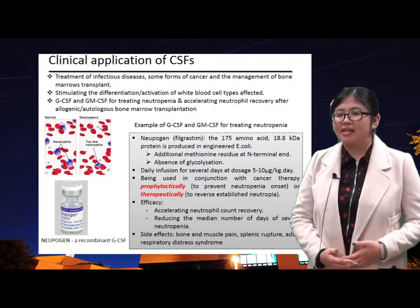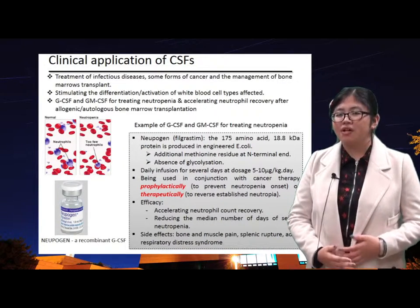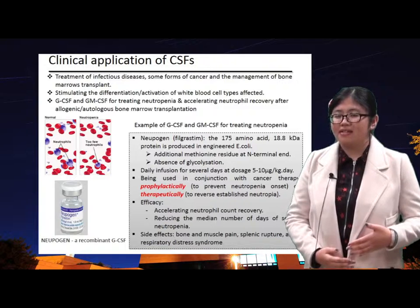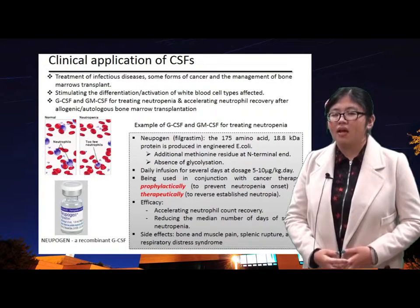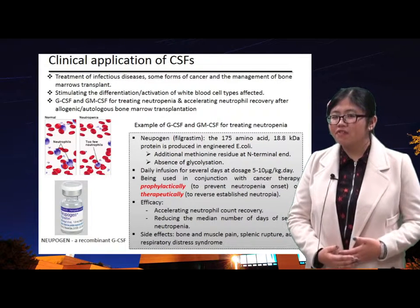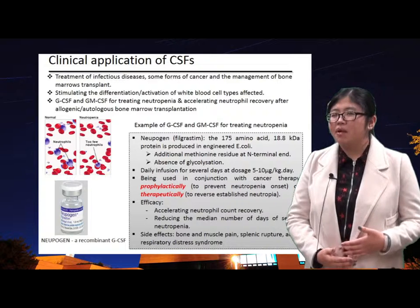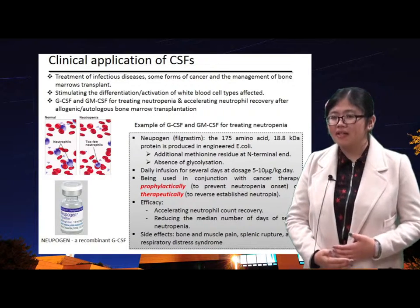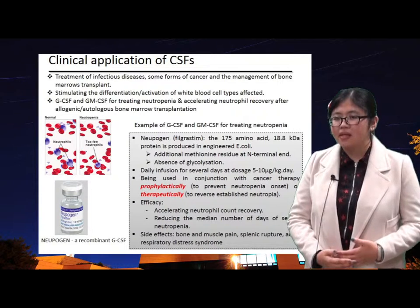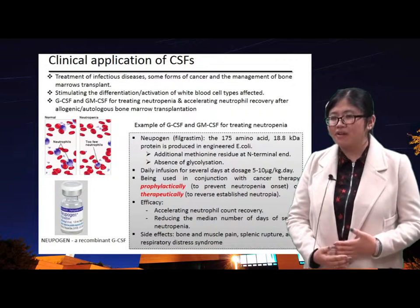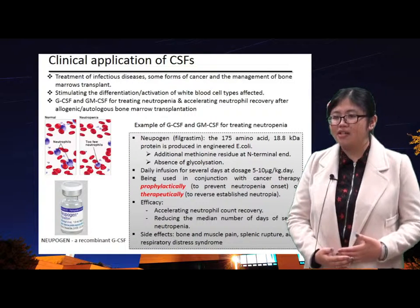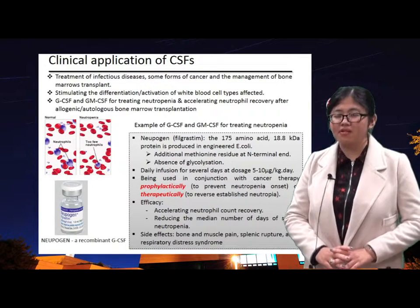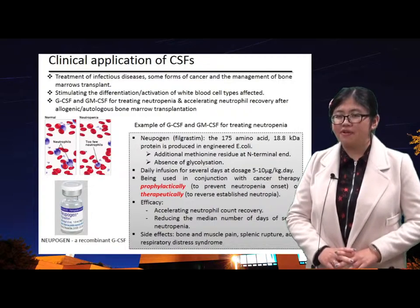Neupogen is produced in engineered E. coli, and compared to the native human form, it has an additional methionine residue at the N-terminal end and is absent of glycosylation. It can be used with daily infusion for several days in conjunction with cancer therapy, either prophylactically — meaning to prevent neutropenia onset — or therapeutically — meaning to reverse established neutropenia. It helps to accelerate neutrophil recovery and reduce the median number of days of severe neutropenia. However, it still has some side effects such as bone and muscle pain, splenic rupture, and adult respiratory distress syndrome.